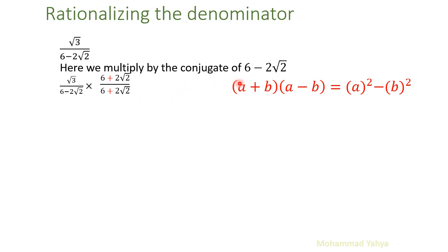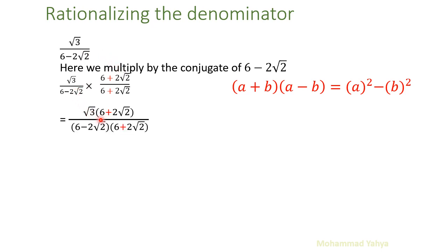The denominator is now in the form of (a − b)(a + b), so no need to fully expand — its answer is a² − b². In the numerator we need to expand: radical 3 times 6 is 6 radical 3, and radical 3 times 2 radical 2 gives us 1 times 2 outside and radical 3 times radical 2 = radical 6 inside.